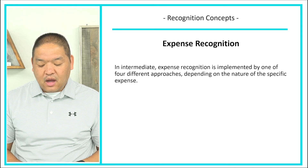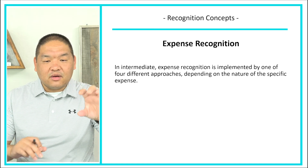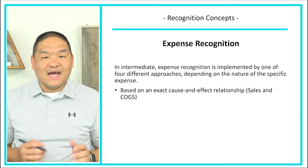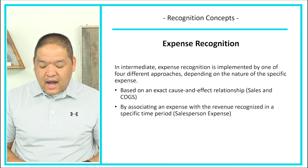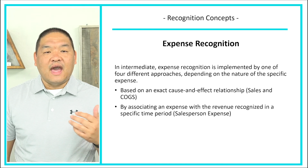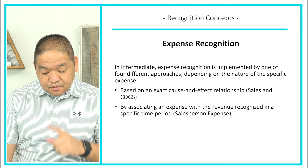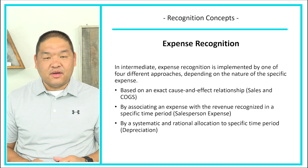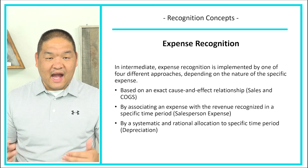In intermediate accounting, expense recognition is implemented through one of four different approaches depending on the nature of the specific expense. In principles we kept it simple — product or period cost — but in intermediate we have four categories. The first is based on an exact cause-and-effect relationship, like sales commissions tied directly to revenue recognized. The second is by systematic and rational allocation to a specific time period — for example, depreciation, where we allocate the cost of an asset over its useful life.